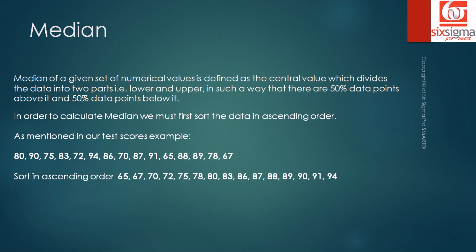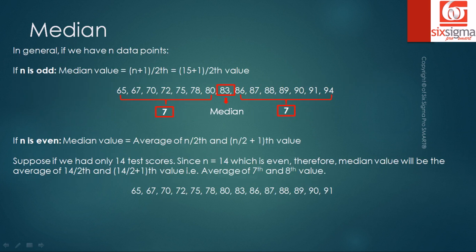This is now in ascending order. We have seven data points to the left and seven data points to the right of the number 83. Therefore, this is the number that divides your data into two halves. And that's where it is the median.